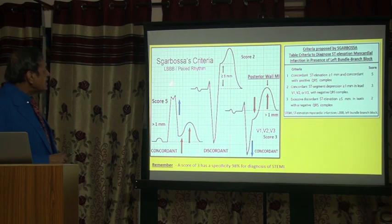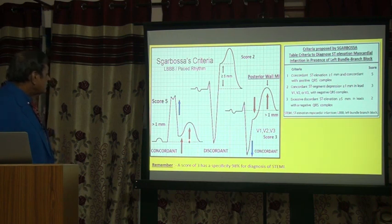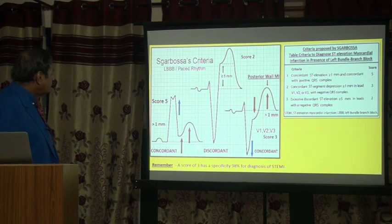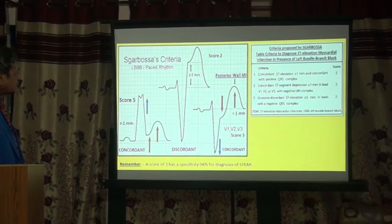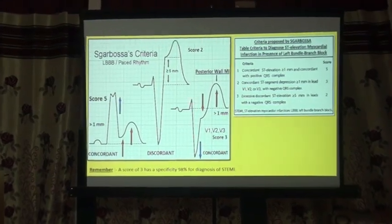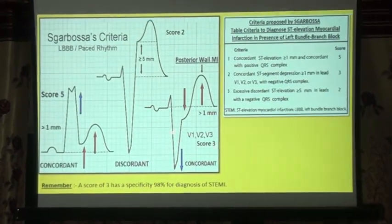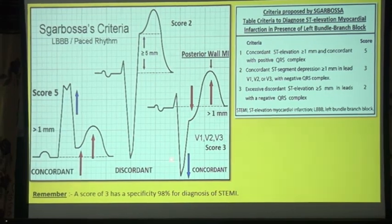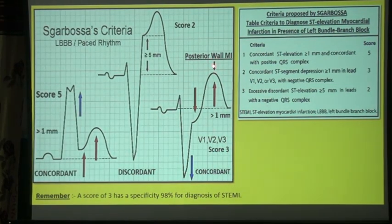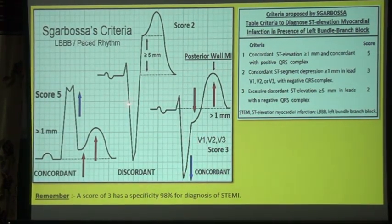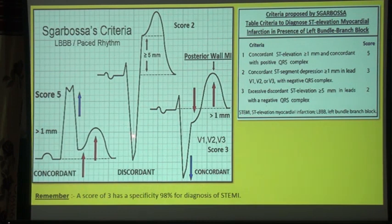To summarize all three Sgarbossa criteria: concordant ST elevation more than 1 mm with positive QRS scores 5; concordant ST depression with negative QRS scores 3 and is a typical pattern of posterior MI; discordant ST elevation above baseline with QRS below baseline scores only 2.